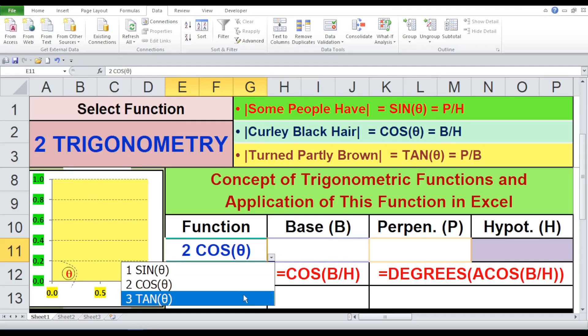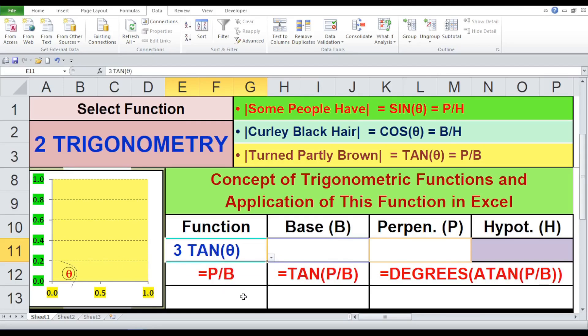To find theta using Atan: equals degrees, open first bracket, Atan, open first bracket, P by B, close first bracket, close first bracket. By using these formulas, you can easily calculate the angle in degrees and use it in your further calculations. Then, we can apply the trigonometric functions to find the values of sine, cosine, and tangent.